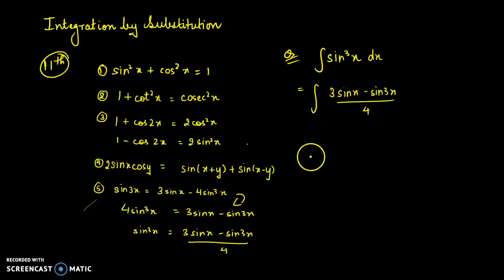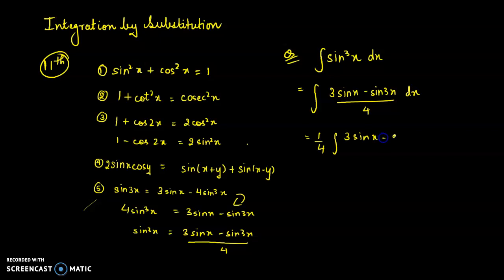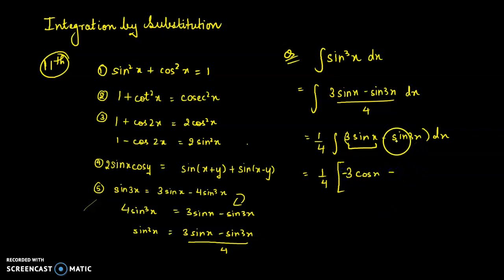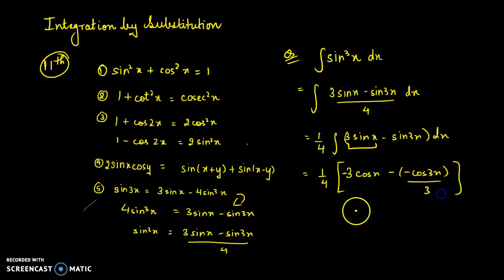Now, 1/4 is a constant, so it comes out of the integration. You integrate 3 sin x minus sin 3x separately. Integration of 3 sin x is −3 cos x, and integration of sin 3x is −cos 3x divided by 3. That is how we separately integrate — we can't directly integrate sin³x; we need to break it up.